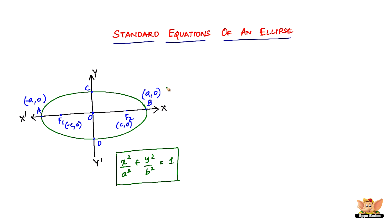Before looking at the vertical form, let us look into the coordinates of the various parts. We have the foci here. The coordinate of focus F1 is minus c comma zero — because the length between zero and F1 is c, it lies on the negative direction of the x-axis, and since it lies on the x-axis the y-coordinate is zero. The coordinate of focus F2 is c comma zero, lying on the positive direction of the x-axis.